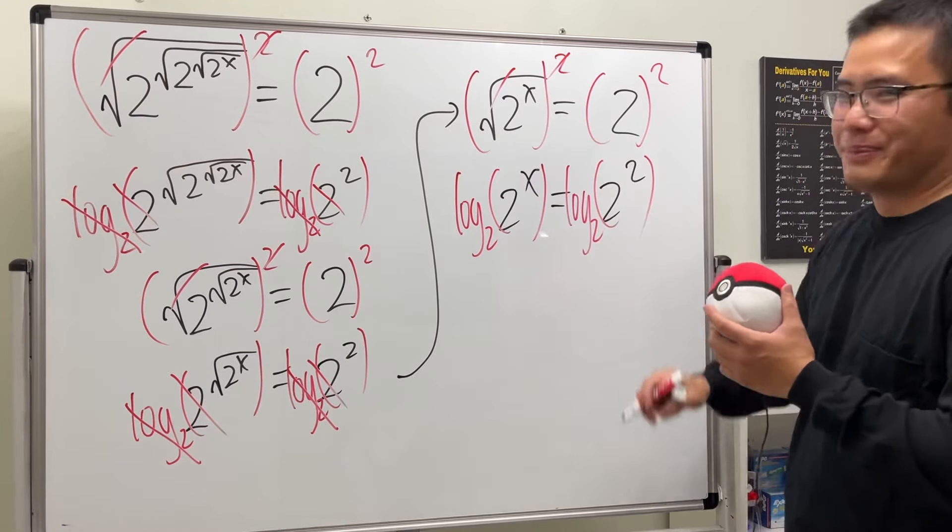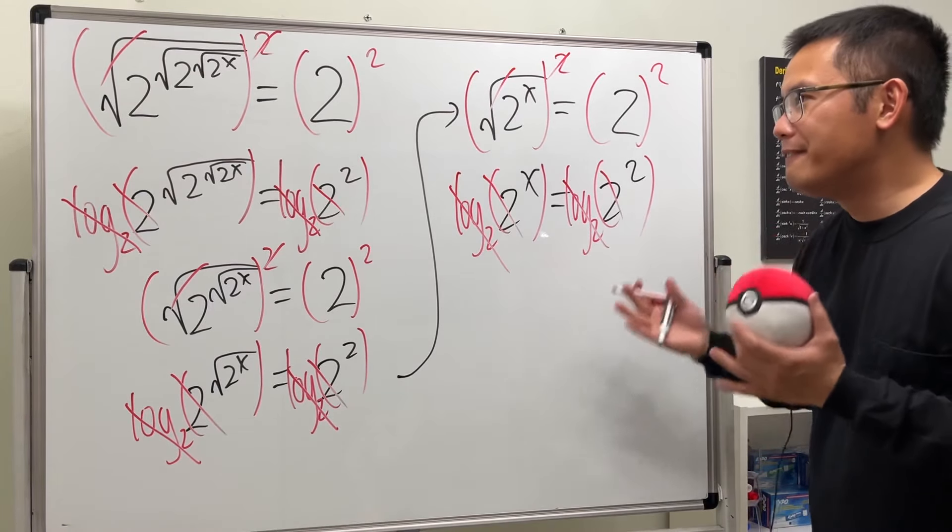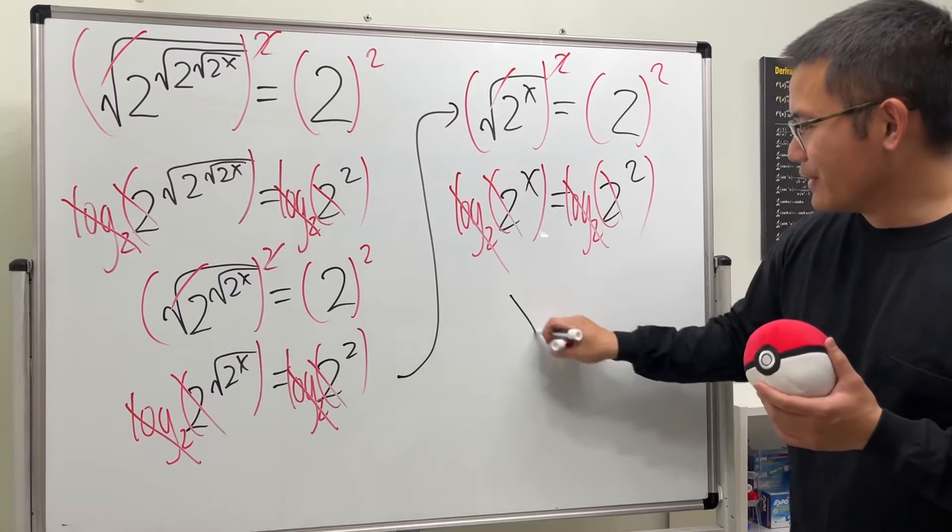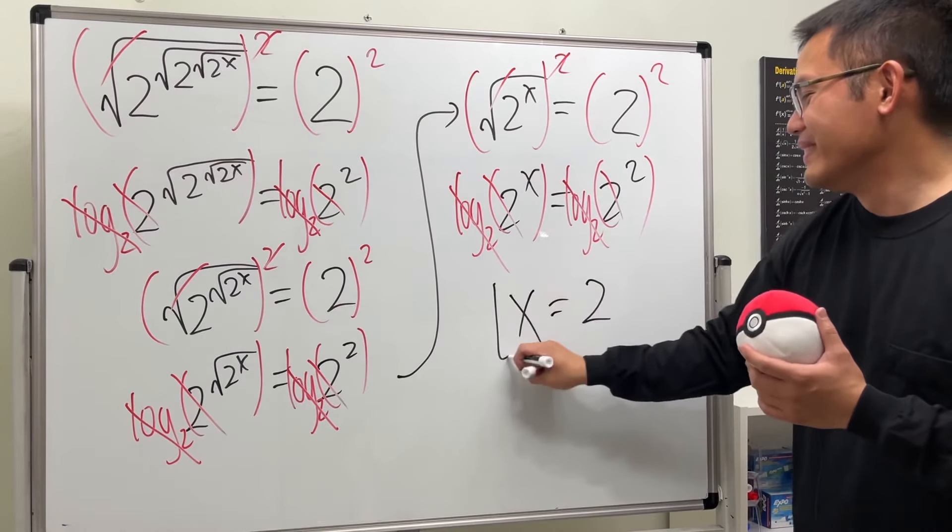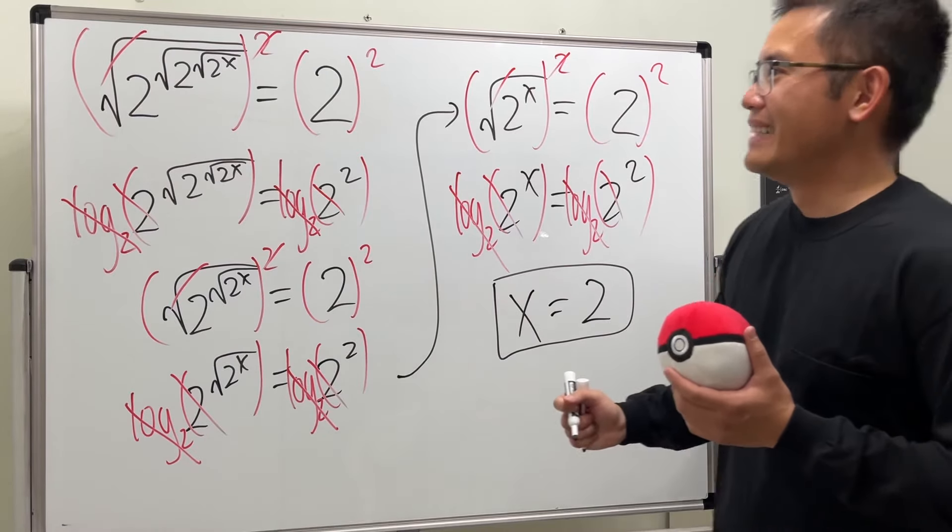Aha, how pretty is this right? Because this and that cancel out, this and that also cancel, so in fact the answer for this right here is just equal to 2. How beautiful is this?